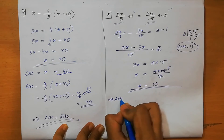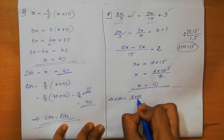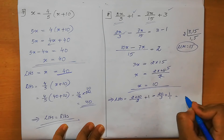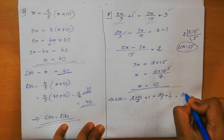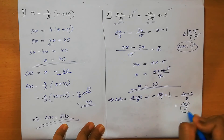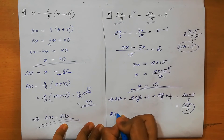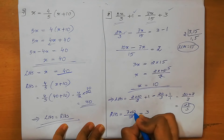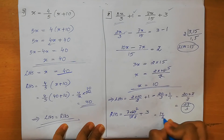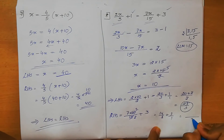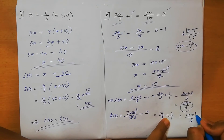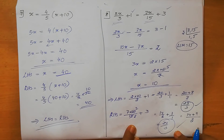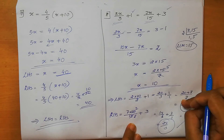We verify: LHS = 2(10)/3 + 1 = 20/3 + 1 = 20/3 + 3/3 = 23/3. RHS = 7(10)/15 + 3 = 70/15 + 3 = 14/3 + 3 = 14/3 + 9/3 = 23/3. LHS = RHS = 23/3. Hence verified.